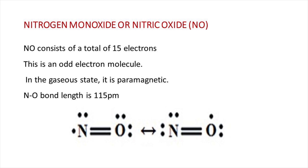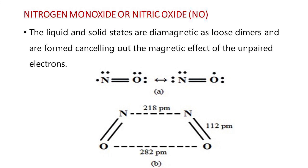Another nitrogen oxide is nitrogen monoxide, or nitric oxide, with the chemical formula NO. Nitrogen monoxide consists of a total of 15 electrons and is an odd electron molecule. In the gaseous state, it is paramagnetic. The NO bond length is 115 picometers. In the liquid and solid state, it is diamagnetic and exists as loose dimers, cancelling out the magnetic moment of the unpaired electrons.